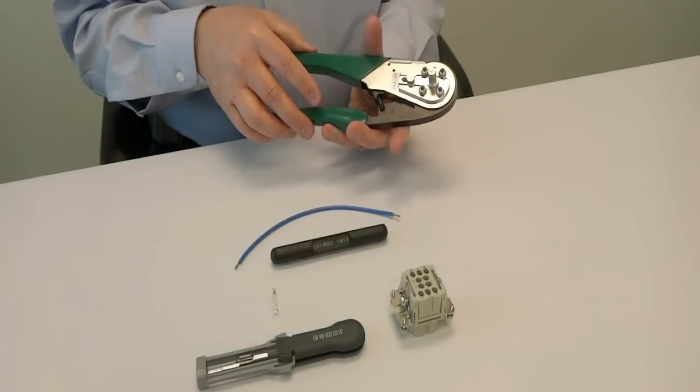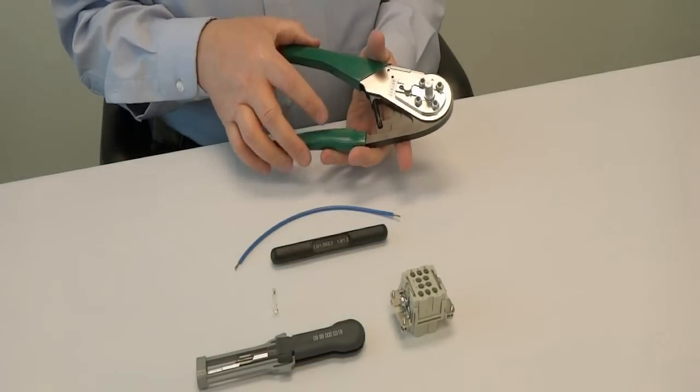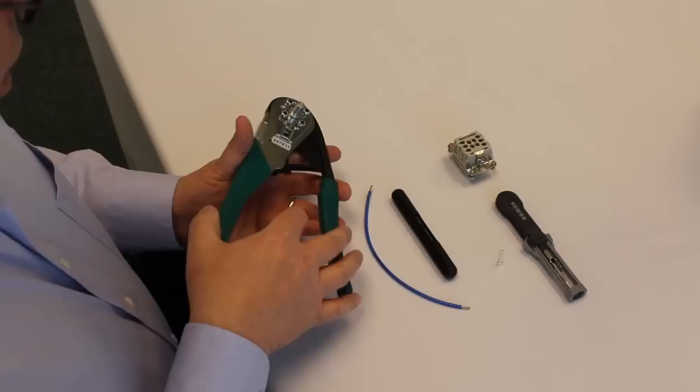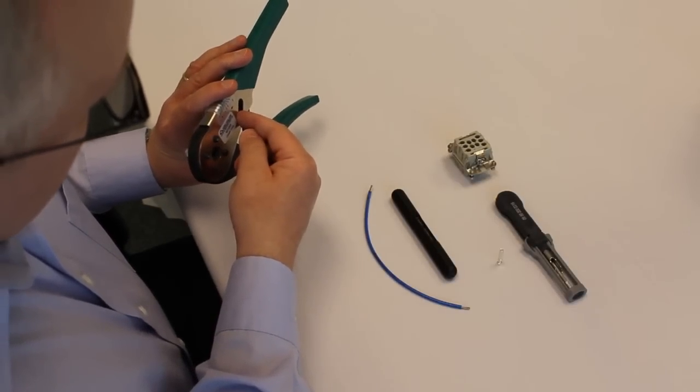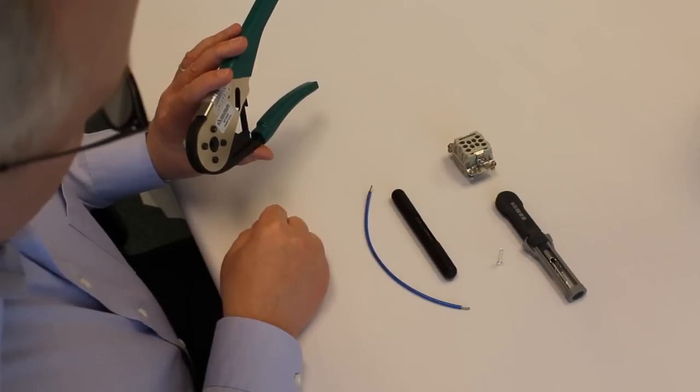This is a closed cycle tool, so it has to close completely before it will open again. If it's partially closed, there's a release lever on the inside to open the tool in case of an emergency.